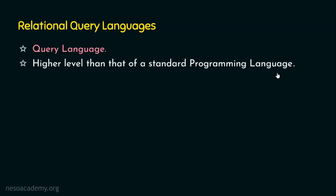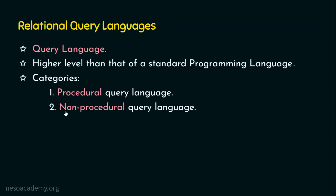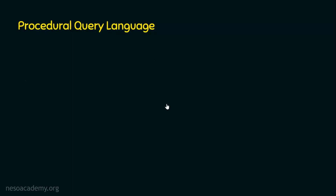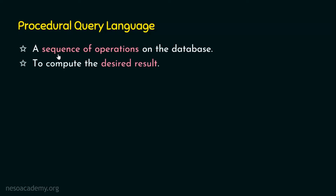Basically, there are two categories of query language. The first is the procedural query language, and the second is the non-procedural query language. In a procedural query language, a sequence of operations are executed on the database to compute the desired result. We write a query that carries out a sequence of operations on the database in order to get the desired result.